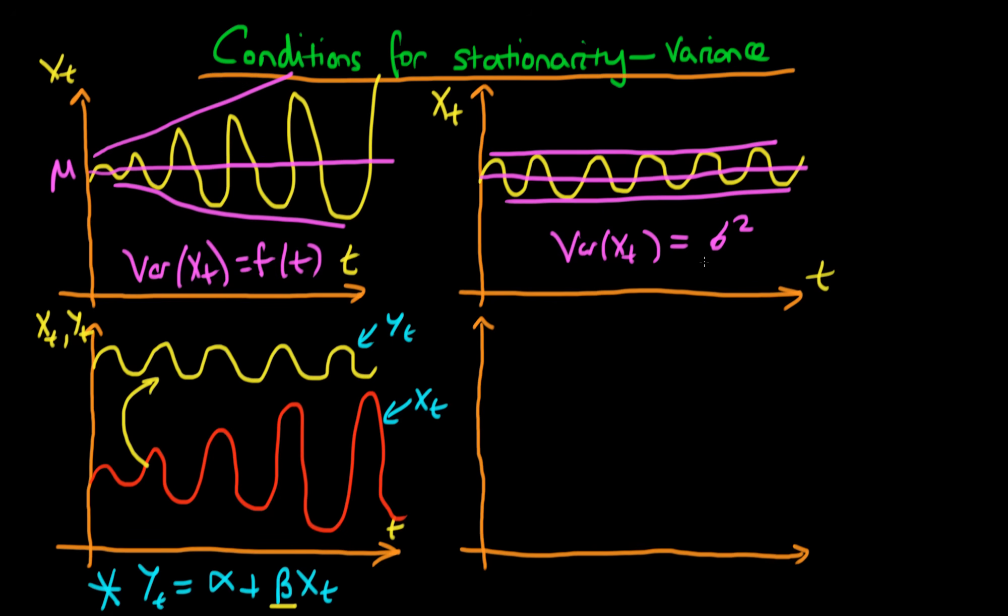So again, the sort of situation which we're hoping for is something whereby we have a y which looks something like that, and we have an x which looks something like that. So this is my yt and this is my xt.